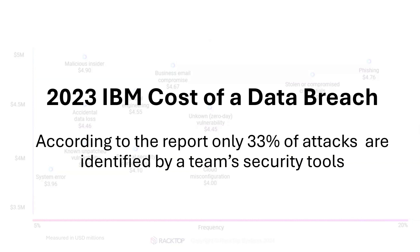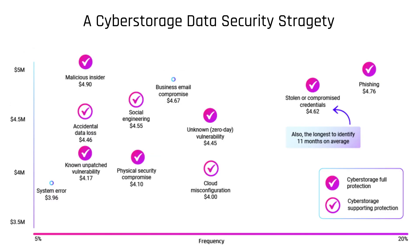Only 33% of attacks are identified by security tools. Often the attack is caught by a third party after their data is compromised and found elsewhere. With ransomware, we've now passed 50% — about 54% of organizations recognized the attack — but really because the ransomware gang contacted them saying they'd been hacked. We really need to move toward an environment where we assume breach and take a zero trust approach.